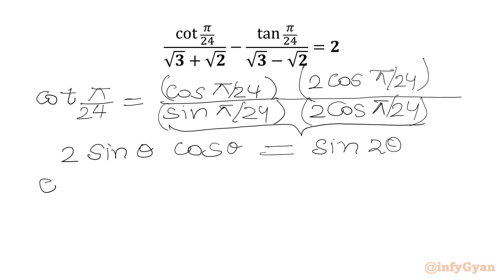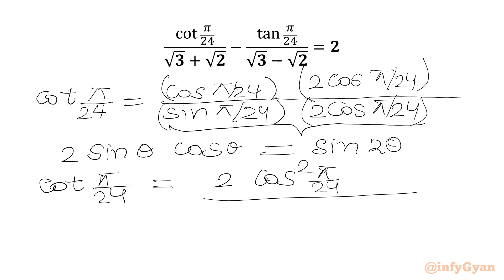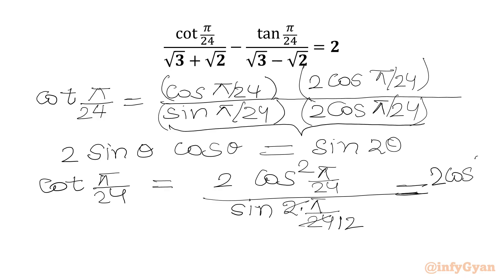So we will write cot(π/24) equal to 2cos²(π/24) over 2 sin θ cos θ, which we write as sin 2θ. So with θ = π/24, we get sin(2 × π/24) = sin(π/12) in the denominator, since 2 cancels with 24 to give 12. So cot(π/24) equals 2cos²(π/24) over sin(π/12).